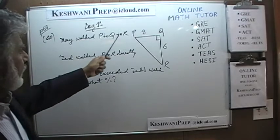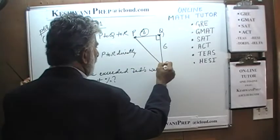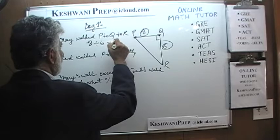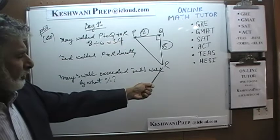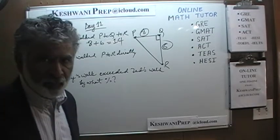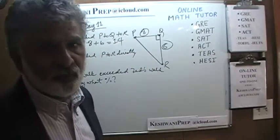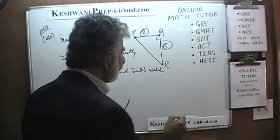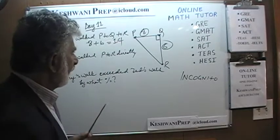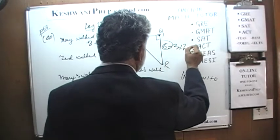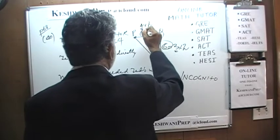Mary walked from P to Q — which is 8 — and then from Q to R — which is 6 — so she walked 14 miles total. Now we need to figure out how far Ted walked, from P to R directly. We could use the Pythagorean theorem, but I hope you're quick enough to realize this is a 3-4-5 triangle incognito. Six is simply 3 times 2, and eight is 4 times 2.